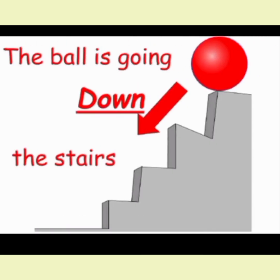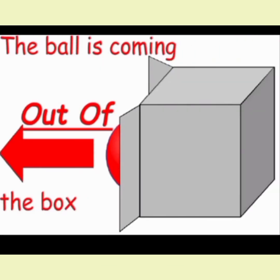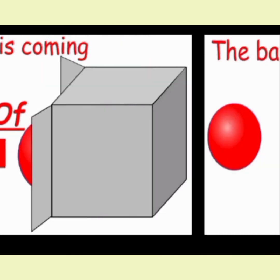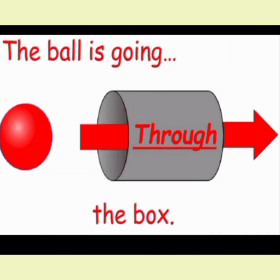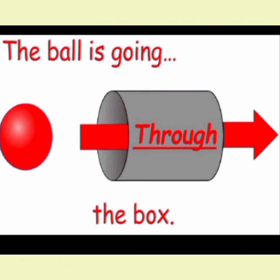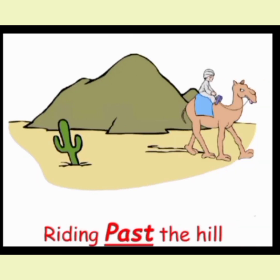Next: down. The ball is going down the stairs — oopar se neeche, down. Next: out of. The ball is coming out of the box — ball andar se bahar aa rahi hai, out of the box. Next: through. The ball is going through the box — ball ke andar se arrow ka nishan aap dekh rahe hain. Through is used in this way — ke zariye se, main se.